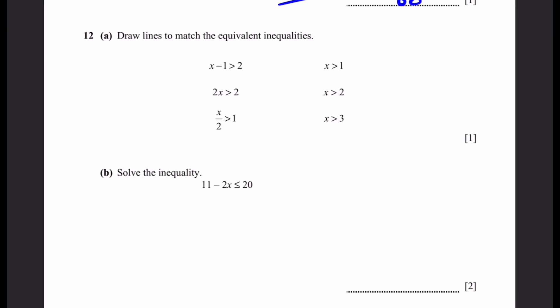Question 12a. Draw lines to match the equivalent inequalities. x minus 1 is greater than 2. Bring the 1 to the other side, the minus 1 becomes plus 1, so that is 3. x is greater than 3 is the correct one. 2x is greater than 2. If we multiply by 2, the inverse operation is dividing by 2, so x is greater than 1. Now the last one has to be x greater than 2. We can prove this by bringing the divided by 2 to the other side. x is greater than 1 times 2, since multiplication is the inverse of division. x is greater than 2.